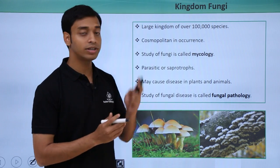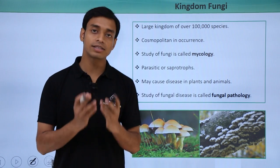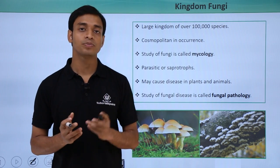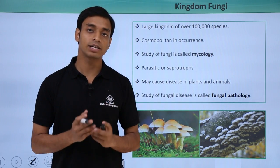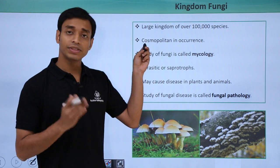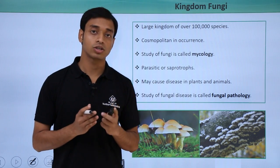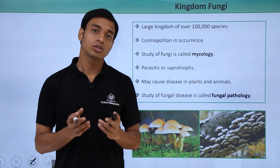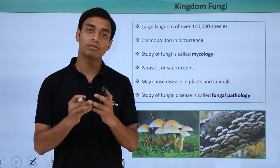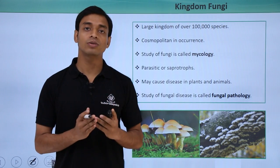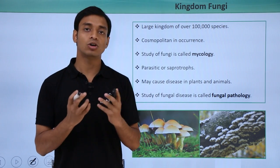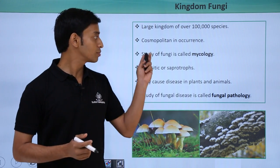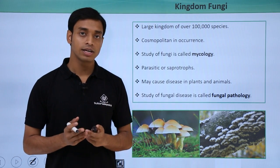Fungi is a very large kingdom and it consists of about one hundred thousand species. They are mostly cosmopolitan in occurrence, which means they can be found everywhere — in air, in water, and in fact they are also found within or inside host organisms like inside plants and animals.